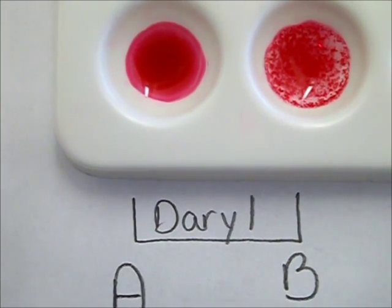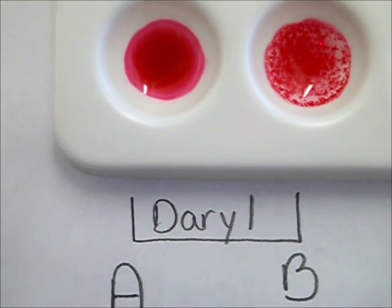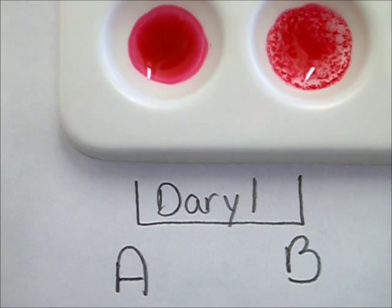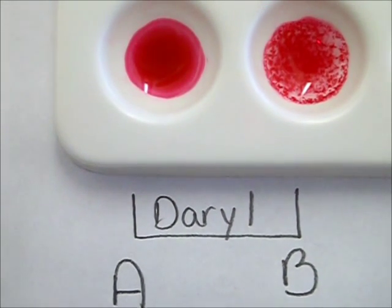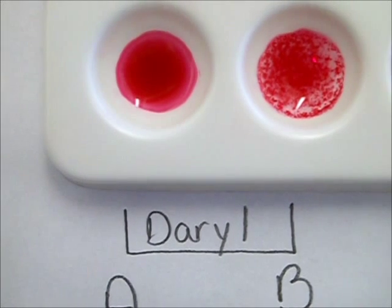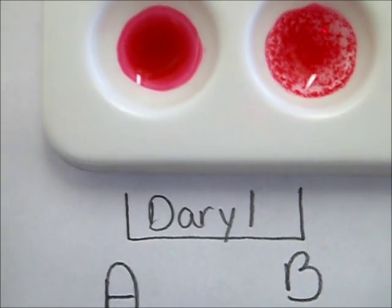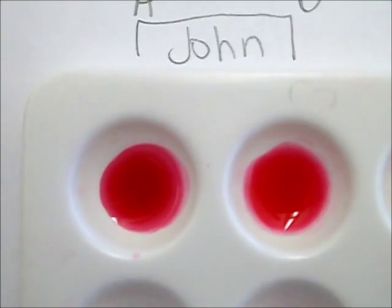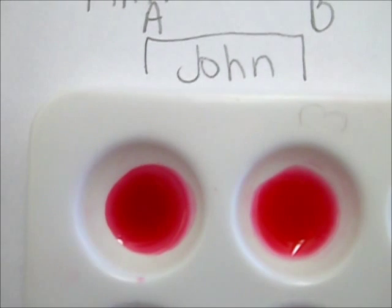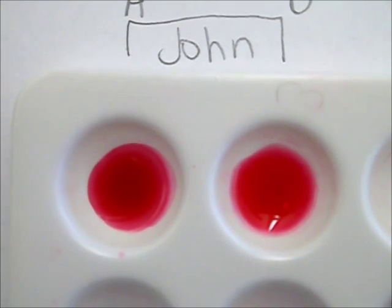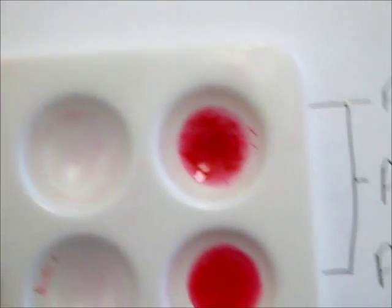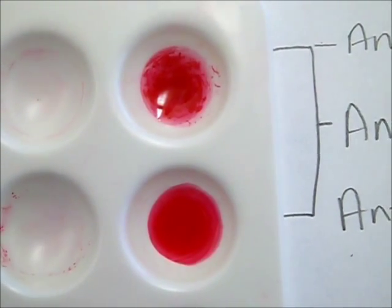So now let's think about blood type. When we see agglutination, that means the antibody found its protein. So in the case of agglutinating with anti-B, that means the B protein was found. Take a minute to write people's blood types. A blood type is a phenotype, so you are simply writing whether it is blood type A, blood type B, blood type AB, or blood type O.